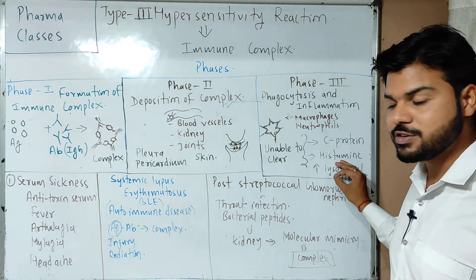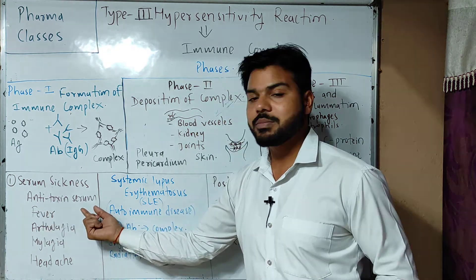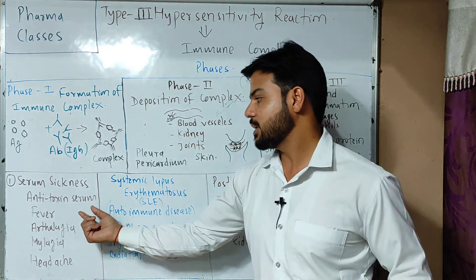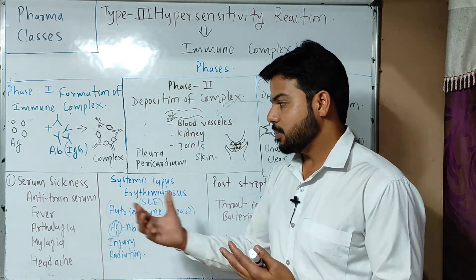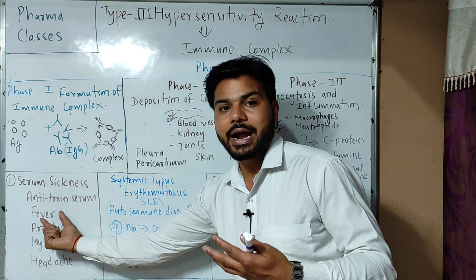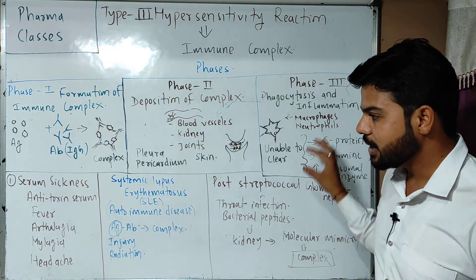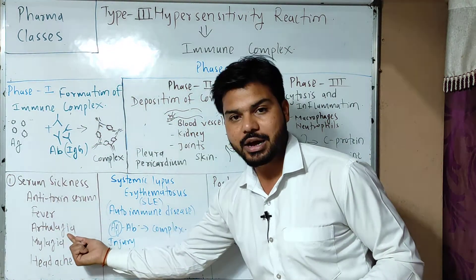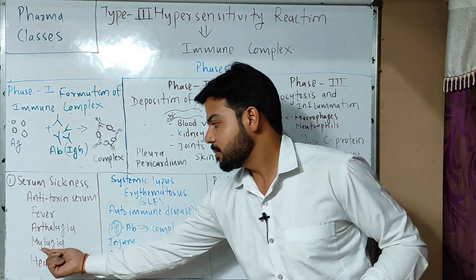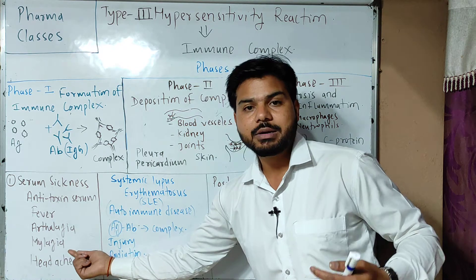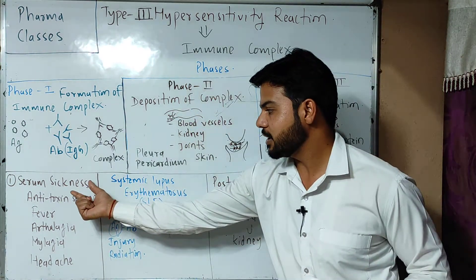Let's talk about some associated diseases. First is serum sickness. When an antitoxin serum is injected, sometimes the body treats it as an antigen, leading to antigen-antibody complex formation. The symptoms include fever, arthralgia (joint pain), myalgia (muscle pain), and headache. This is how serum sickness presents.